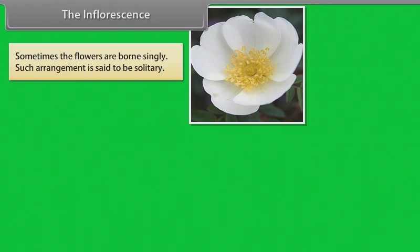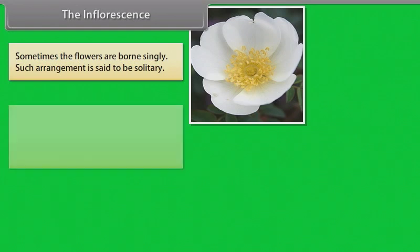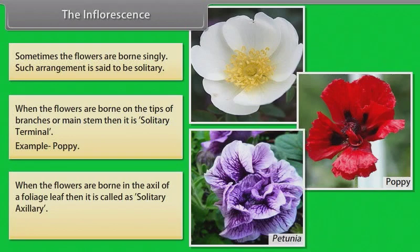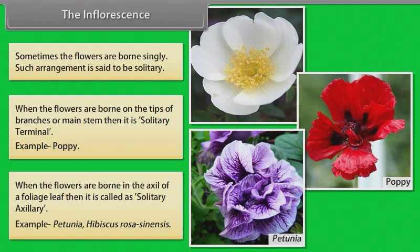Sometimes the flowers are borne singly; such arrangement is said to be solitary. When the flowers are borne on the tips of branches or main stem, then it is solitary terminal — example: poppy. When the flowers are borne in the axil of a foliage leaf, then it is called solitary axillary — example: Petunia, Hibiscus rosa-sinensis.